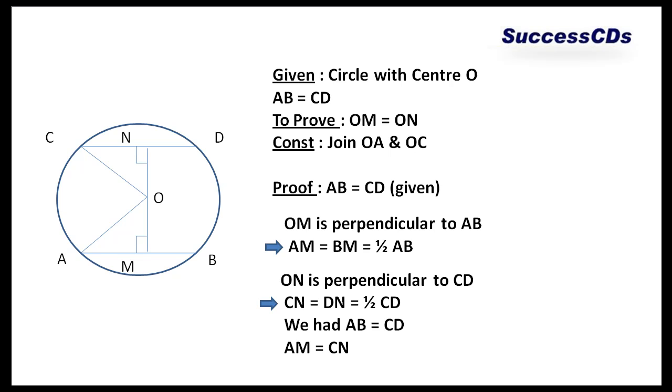That means half AB and half CD are also equal. Thus, we create a set of points which is AM is equal to CN.